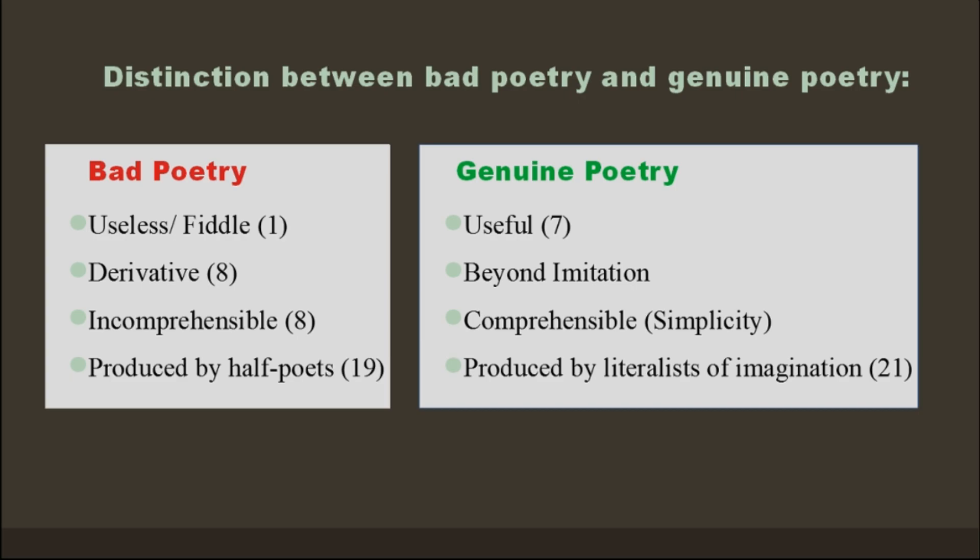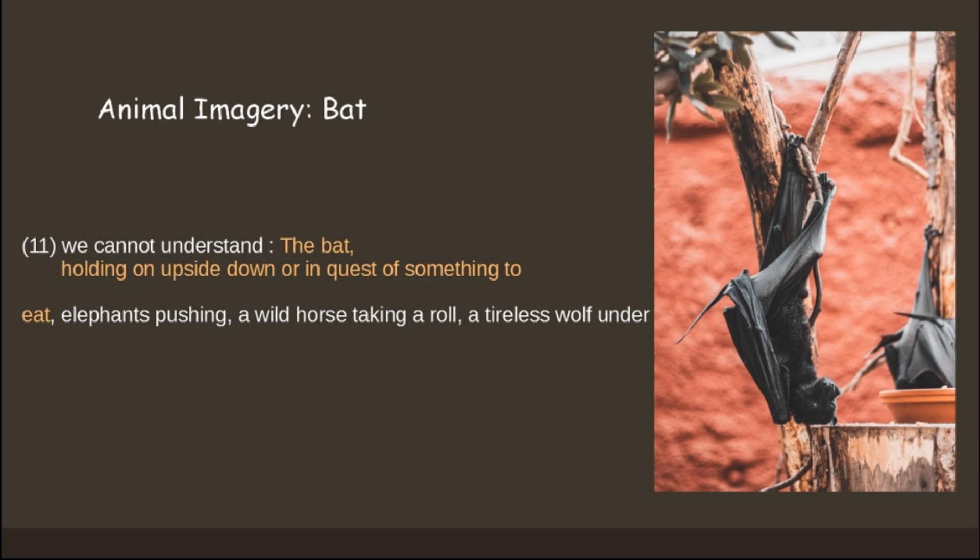The first animal imagery used in the poem is the bat. In line 11 it says 'we cannot understand' followed by a colon. What Moore is trying to say is that we cannot understand because of these reasons, which are given after the colon. She says 'the bat holding on upside down in quest of something to eat.' This image in our mind is very unintelligible — something we just cannot comprehend or relate to. It's not something we can understand easily. This is very complex in nature.